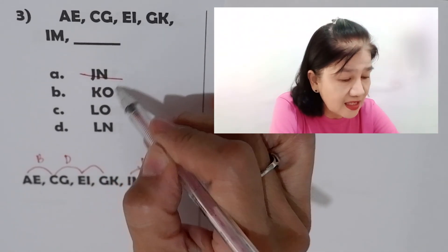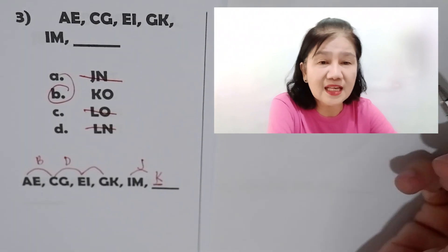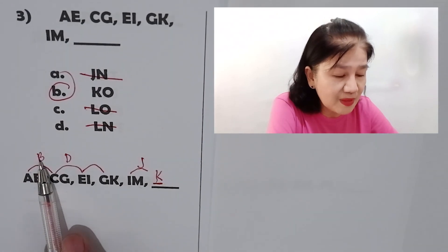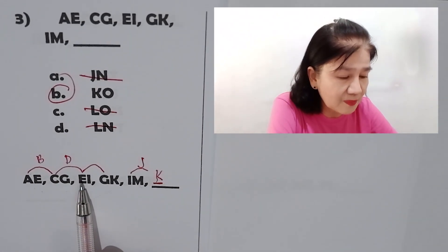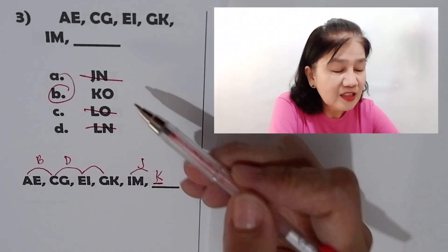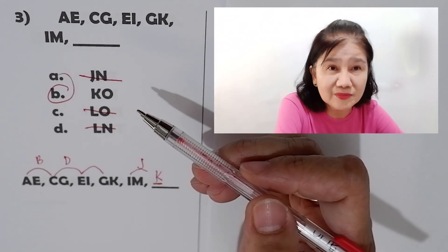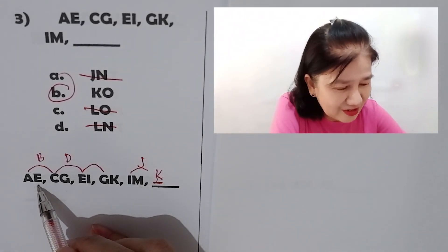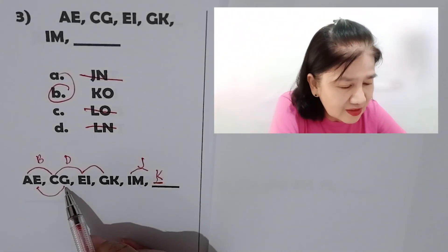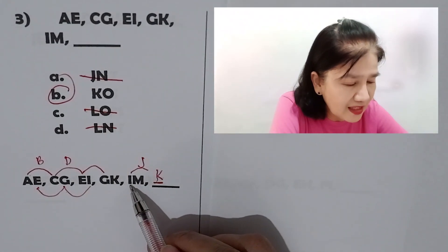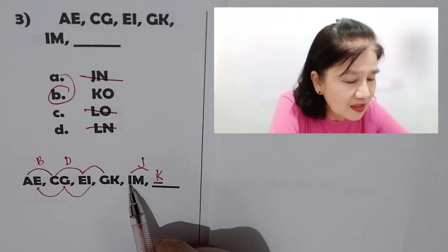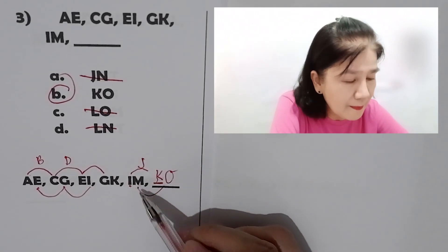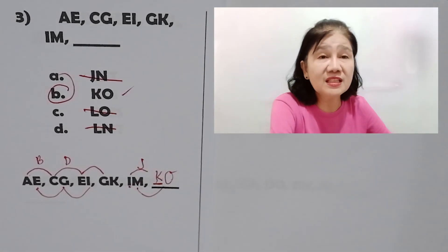So A is not the answer. L M — so B is the answer. That's how you do it. A B C D E — skip — I J K. Let's also check the second letter. E F G, then G H I — skip — I J. Letter M: M N O. So the answer is really letter B.